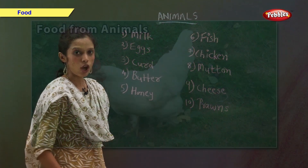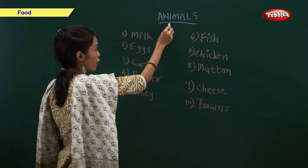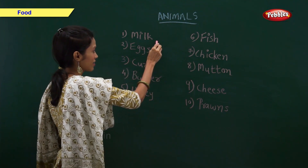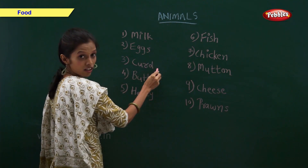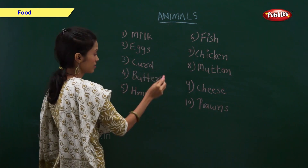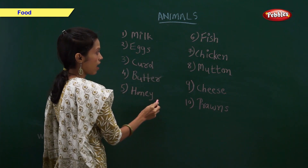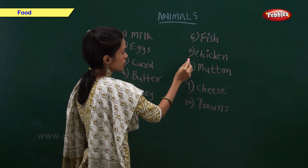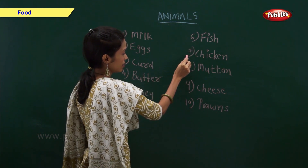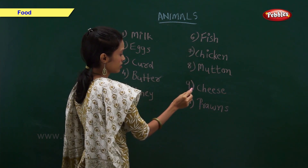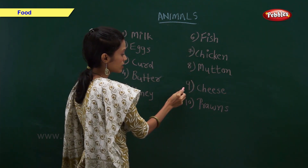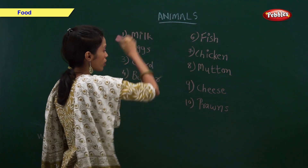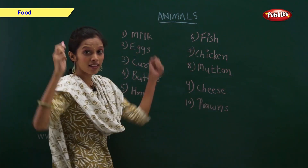We also get food from animals. We get milk, eggs, curd, butter, honey, fish, chicken, mutton, cheese and prawns. All this food is very healthy.